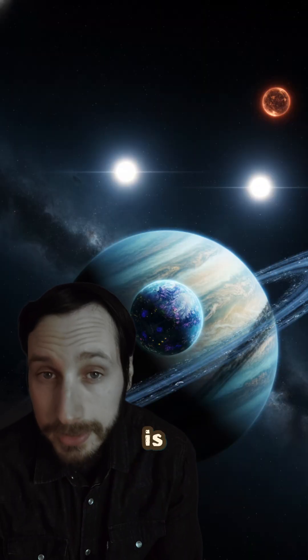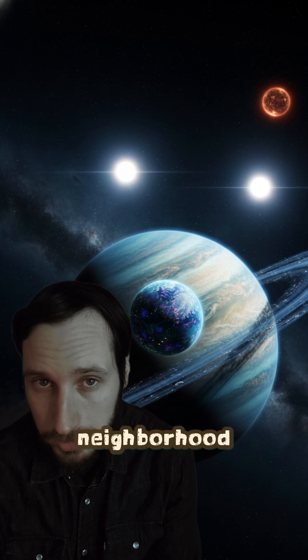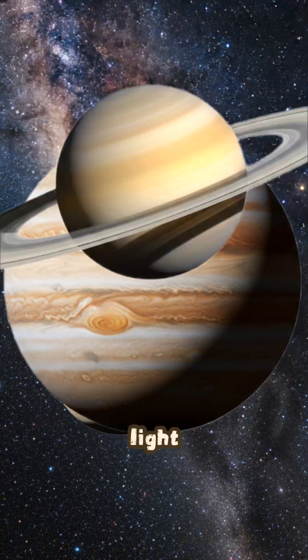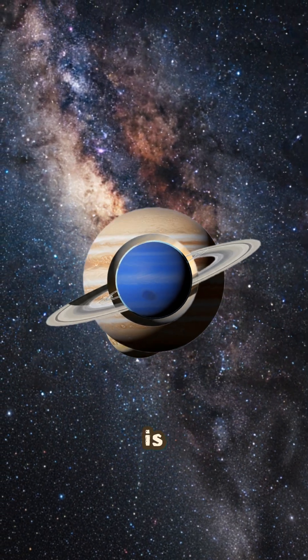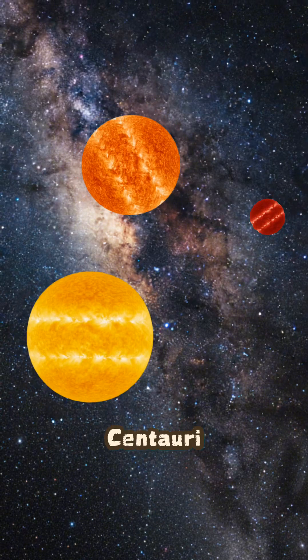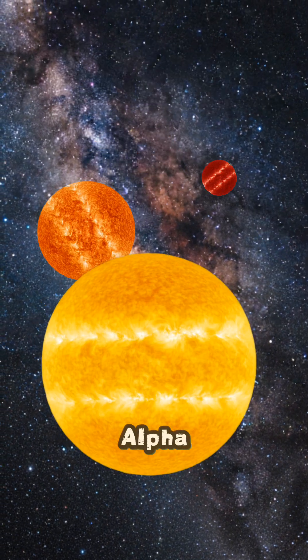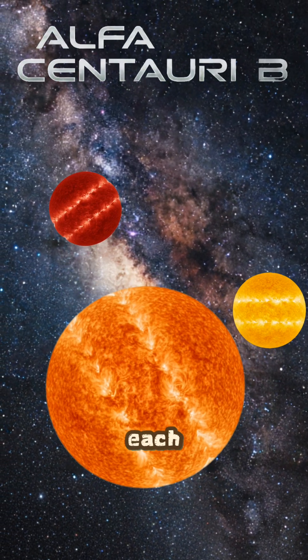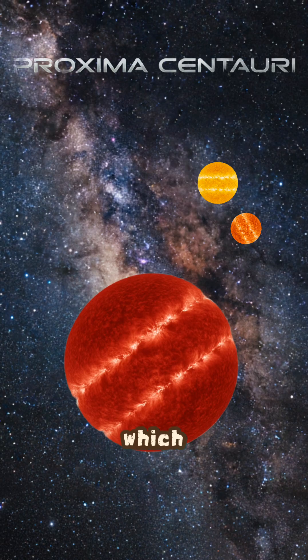Now the crazy thing is that the location of this world is actually in our neighborhood. Around 4.3 light years away from our solar system is our closest stellar neighbor, Alpha Centauri, with its three stars: Alpha Centauri A and B, which orbit each other, and Proxima Centauri, which is a red dwarf.